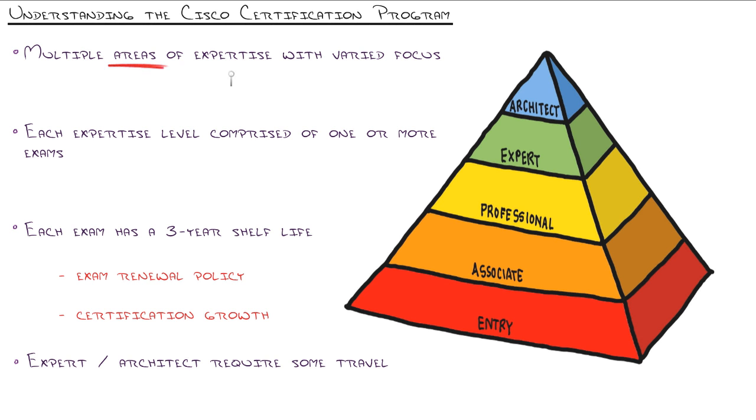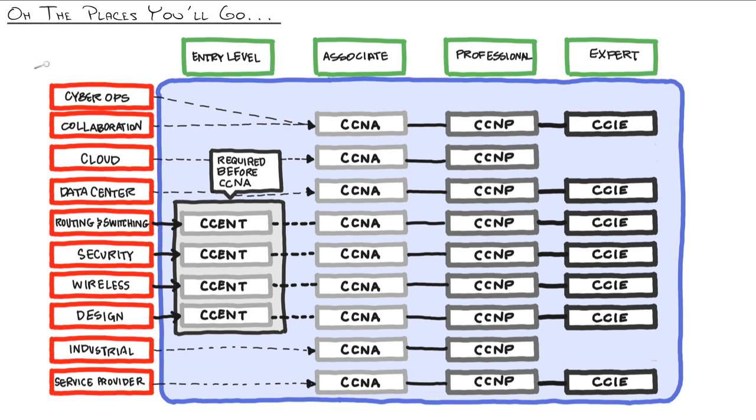The Cisco certification program is multiple areas of expertise with varied focus. I'm going to come back to this slide in just a moment, but this represents all the different paths that you could take in the Cisco certification world. Most people get started with routing and switching, so they get their CCENT certification and then progress along the pyramid of Cisco certification.